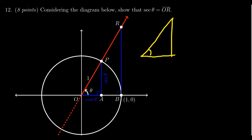We have angle theta in a right triangle. This is O, this is A, and this is P. Because P is on the unit circle, side OA is cosine theta, side PA is sine theta, and the hypotenuse is one.